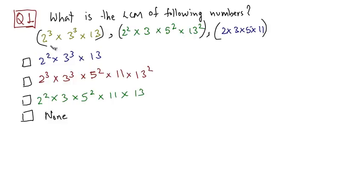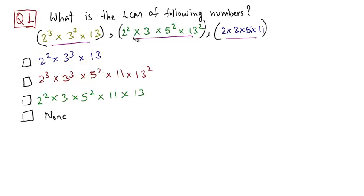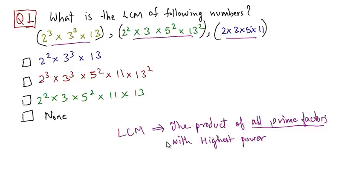If you observe carefully, these numbers that are given to you are expressed as a product of prime factors. And that is the first step we do usually while calculating LCM by using the prime factorization method. If you recall, by prime factorization method, LCM is the product of all prime factors with highest power.